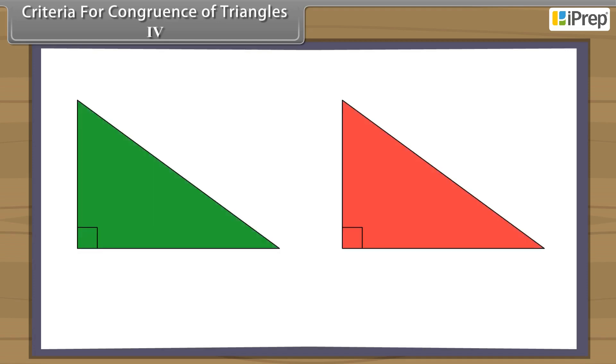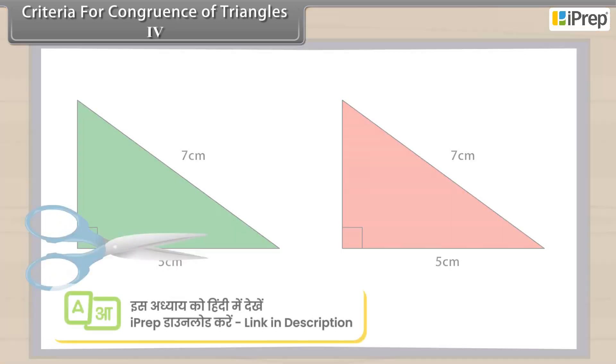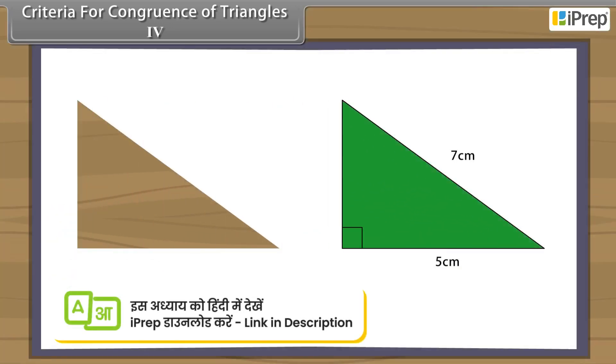Criteria for Congruence of Triangles 4. Now construct two right-angled triangles with hypotenuse equal to 7 cm and one side equal to 5 cm each. Cut them out and place one triangle over the other with equal side placed on each other.